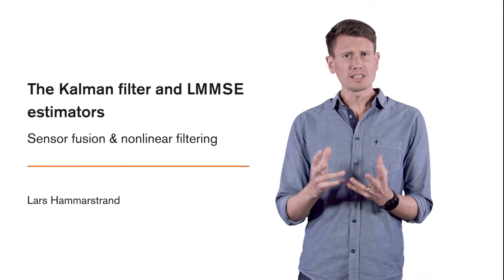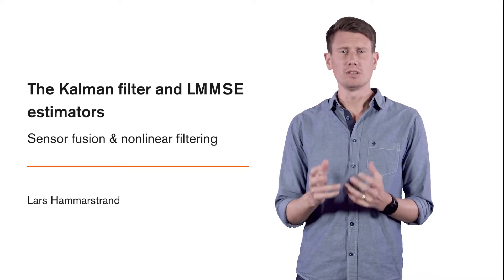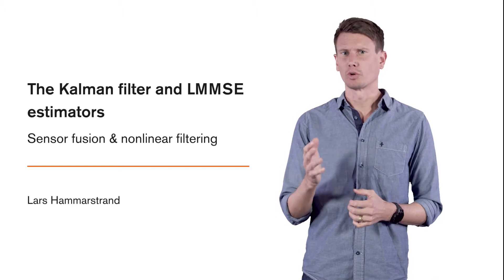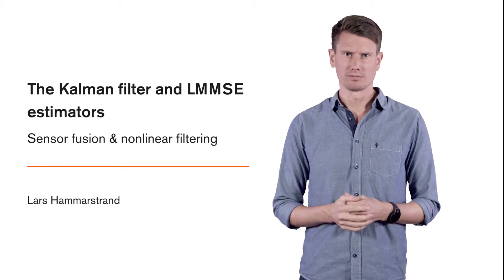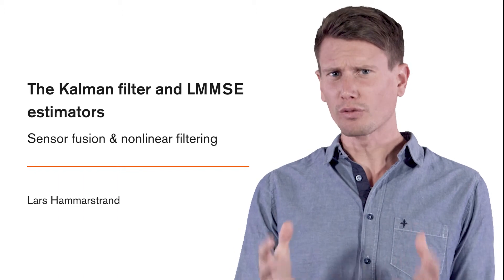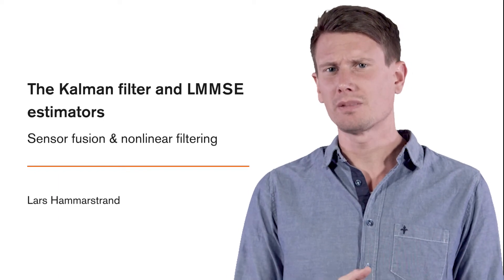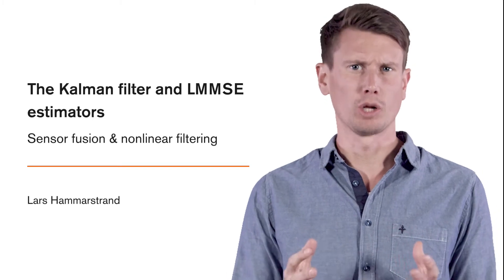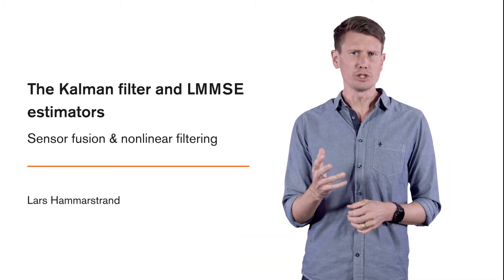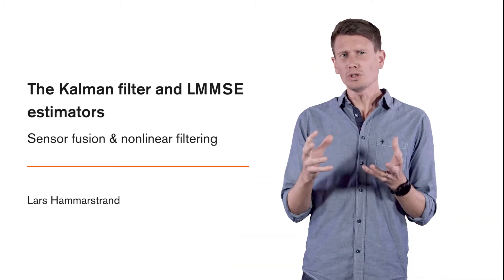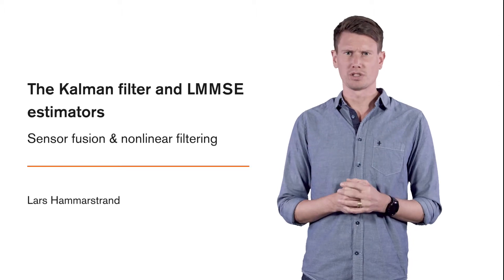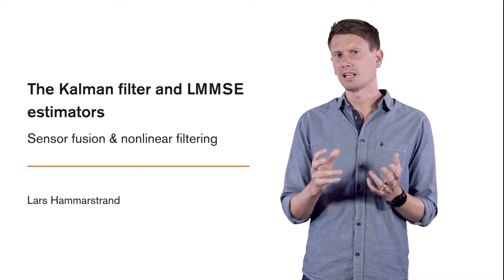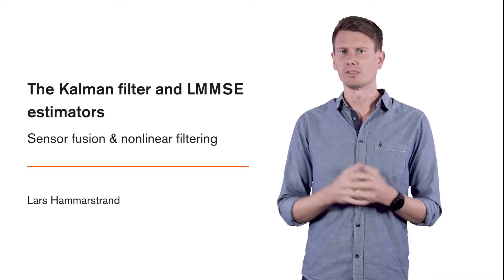From previous lectures, we know that the Kalman filter is the MMSE estimator for linear state-based models with additive Gaussian noise. This means that for this model family, we cannot find an estimator that is better in a mean squared error sense than the Kalman filter. In this lecture, we're going to relax our Gaussian assumptions a bit and see if we can still say something about the optimality of the Kalman filter for these models.